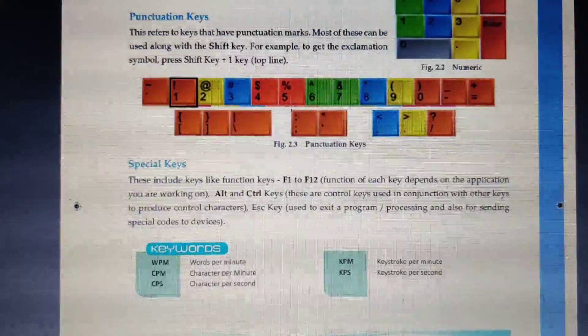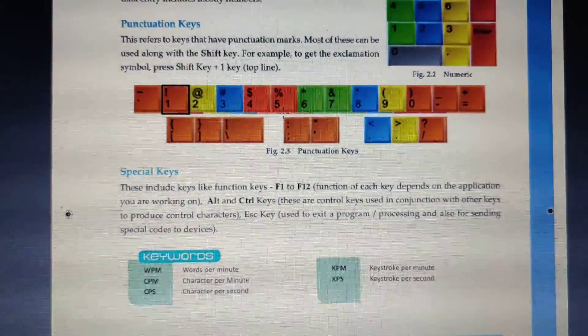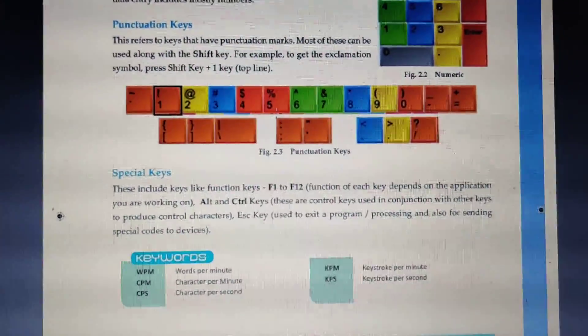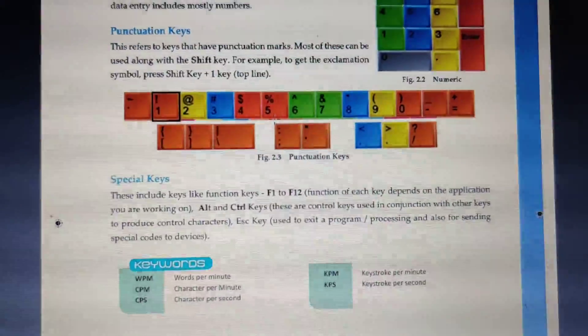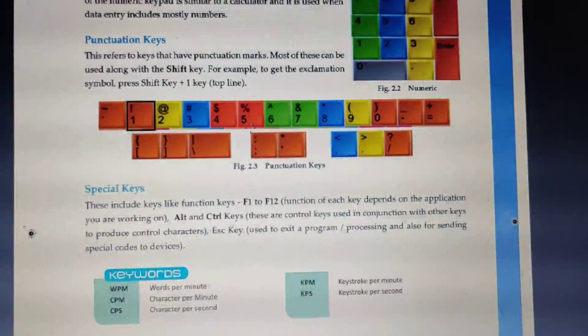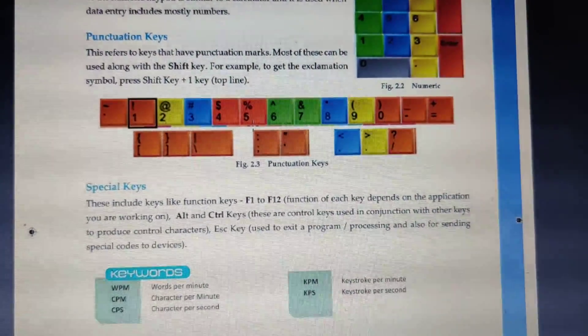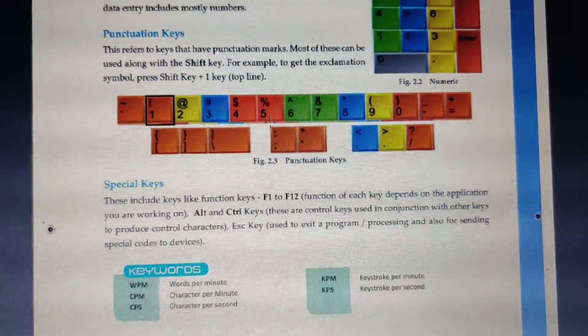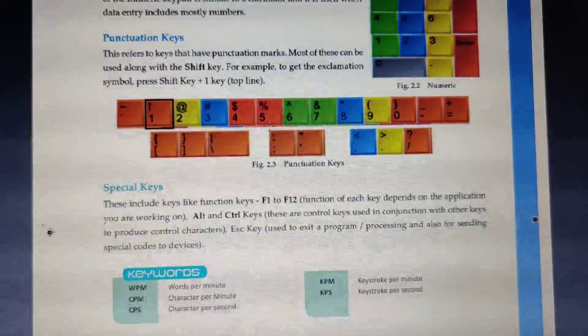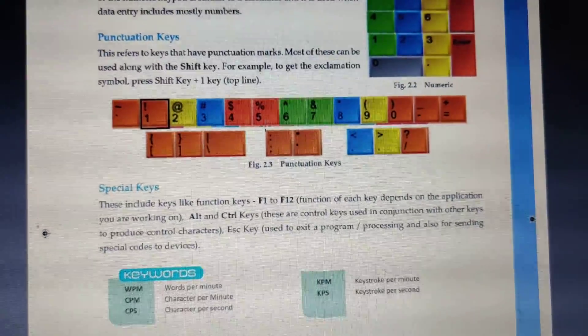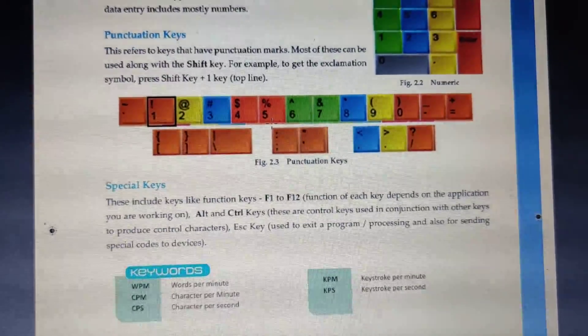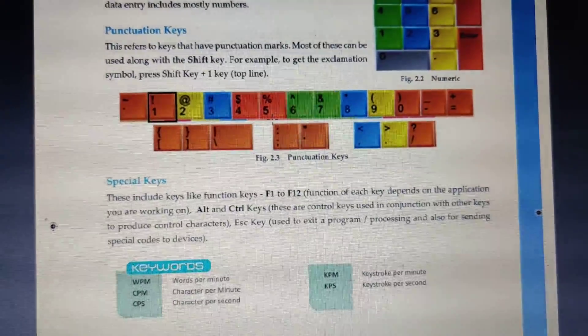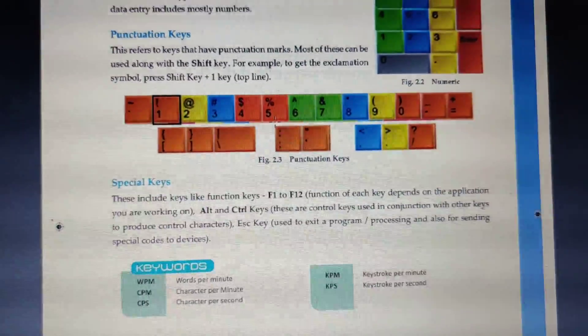Next is special keys. Special keys are those keys in which function keys are included from F1 to F12. Function key is the key in which each key depends on the application you are working on. Alt and Control keys, which we normally call control keys, are used in conjunction with other keys to produce control characters. Escape key is used to exit a program and processing, and also for sending special codes to devices.